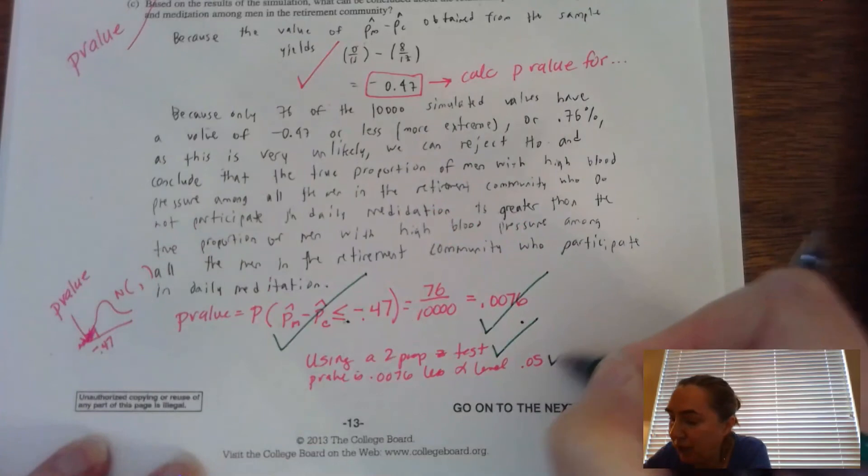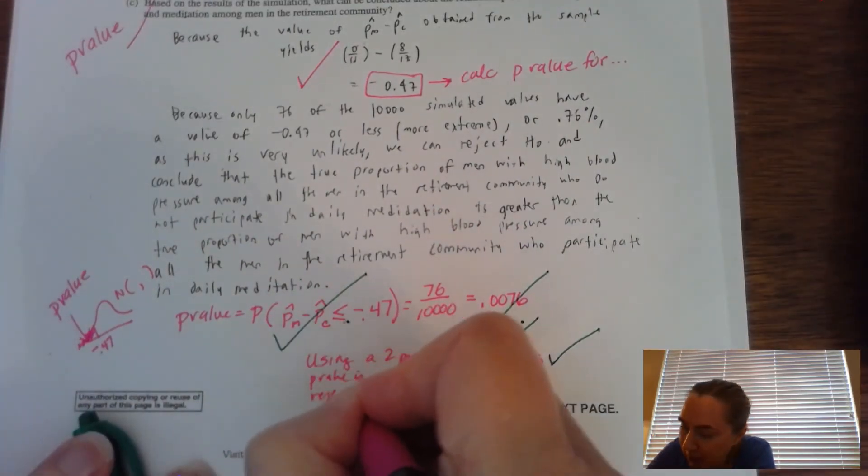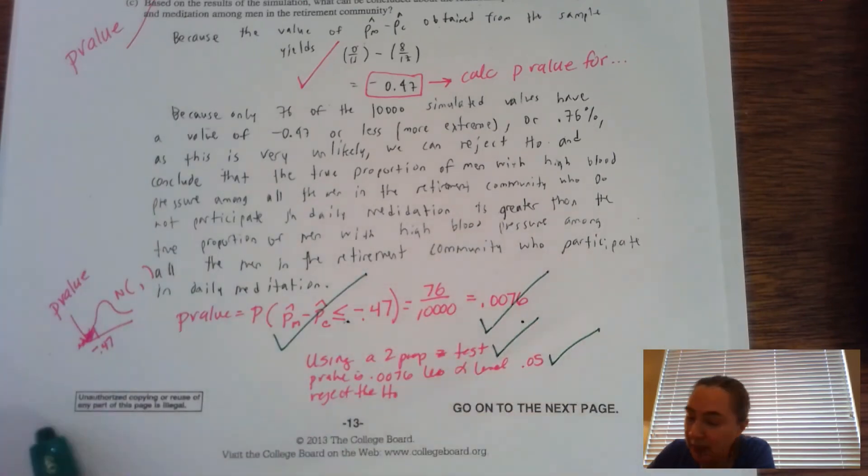If you did that, give yourself a check for that. Make sure that you reject the null hypothesis. If the P is low, reject the hoe. Give yourself a check for that.